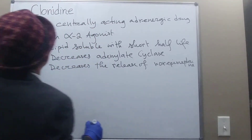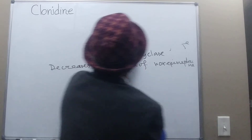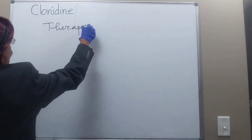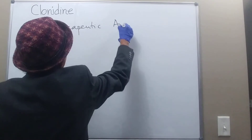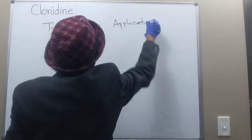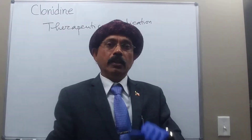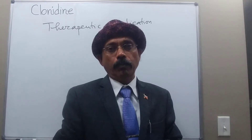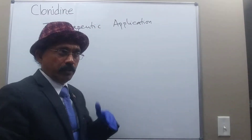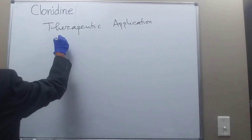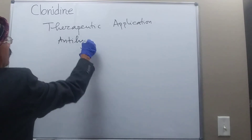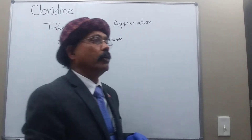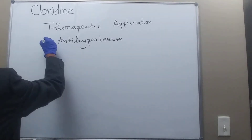Now the therapeutic applications of clonidine: it is an antihypertensive drug used in mild to moderate hypertension, especially when diuretics alone do not work.